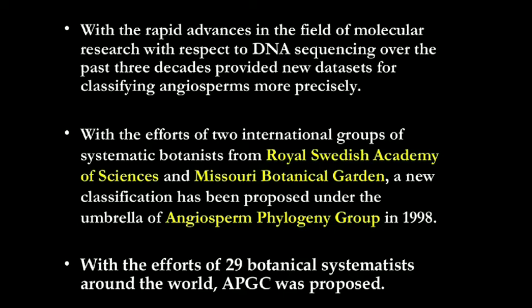With the efforts of two international groups of systematic botanists — from the Royal Swedish Academy of Sciences and the Missouri Botanical Garden — a new angiosperm phylogeny group, APG, was framed in the year 1998. It was proposed with the efforts of 29 botanical systematists from around the world.